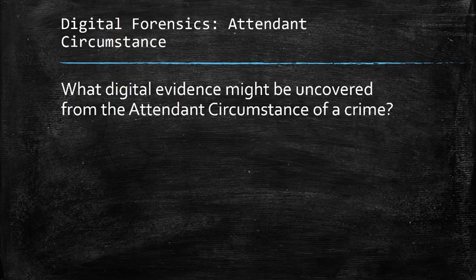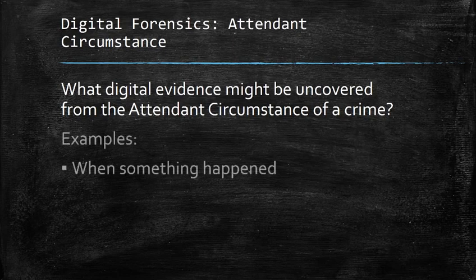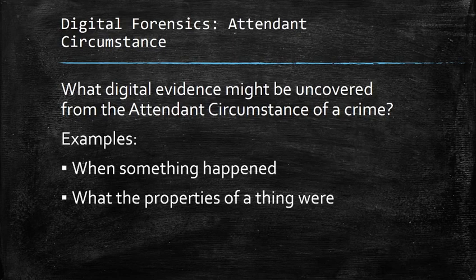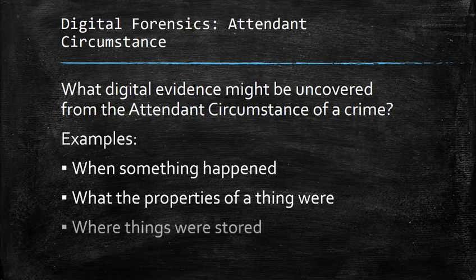And finally, you have the attendant circumstance — those extraneous qualities related to a crime. Things like when something happened, what the properties of a thing were, who did it belong to, where things were stored. Things like that might be related to the attendant circumstance, and all of them involve digital evidence.